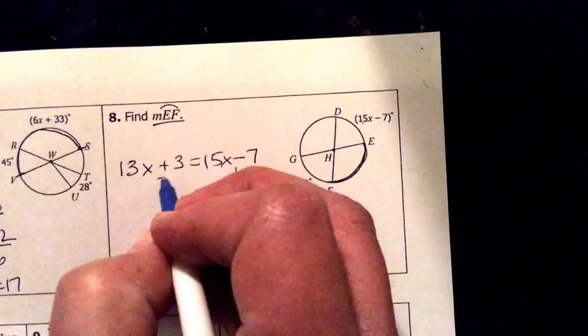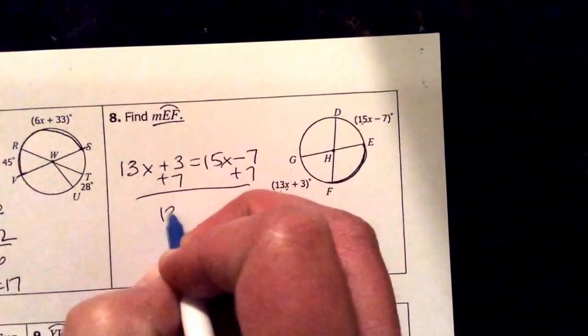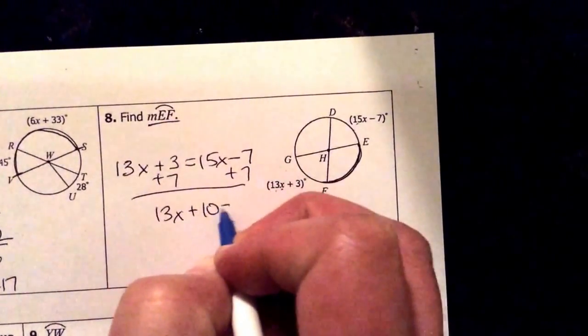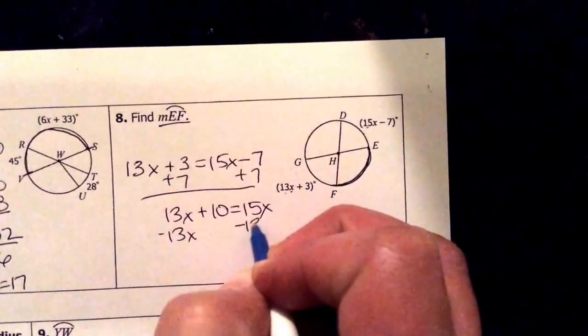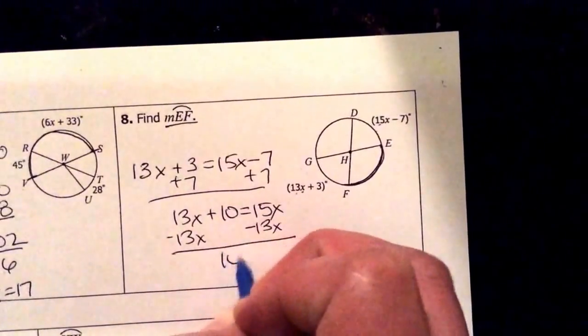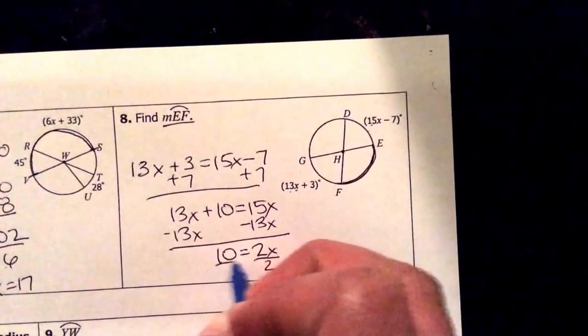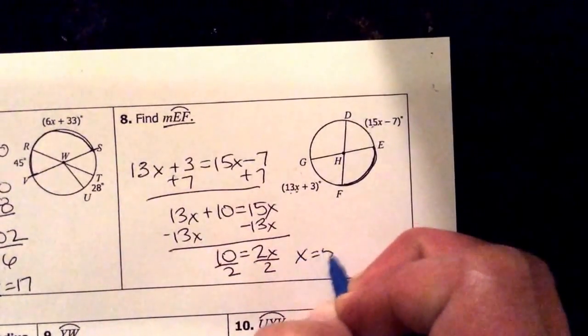If I add 7 to both sides, 13x plus 10 equals 15x. Take away 13x from both sides. 10 equals 2x. Then I have to divide it by 2. x equals 5.